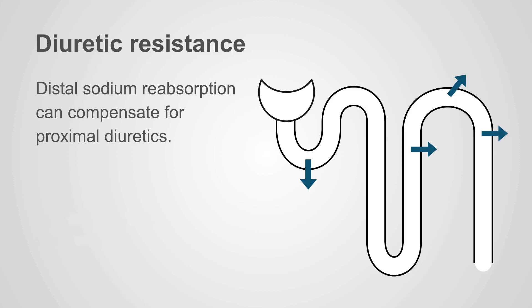The last pattern of diuretic resistance occurs when you get distal sodium reabsorption compensating for a proximal diuretic. An example would be acetazolamide — even if it is highly effective at increasing downstream sodium delivery, the kidney has a number of different opportunities to increase sodium reabsorption and prevent net diuresis. This is one of the primary reasons acetazolamide is considered a weak diuretic.